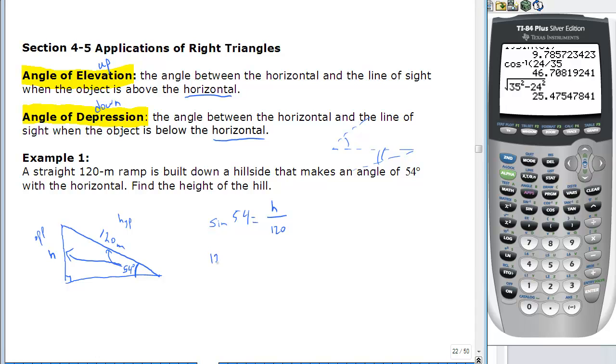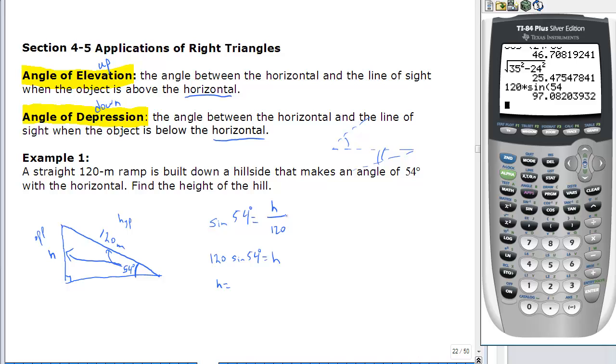Cross multiply, we get 120 sine of 54 equals H. That tells us that H is going to be 120 multiplied by the sine of 54, which is 97.1 meters, rounding to three significant digits. And that's the height of the hill.